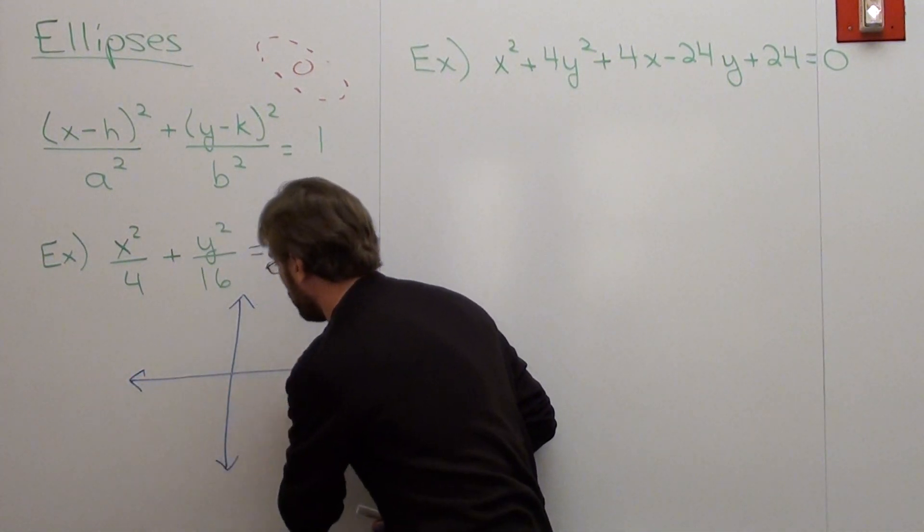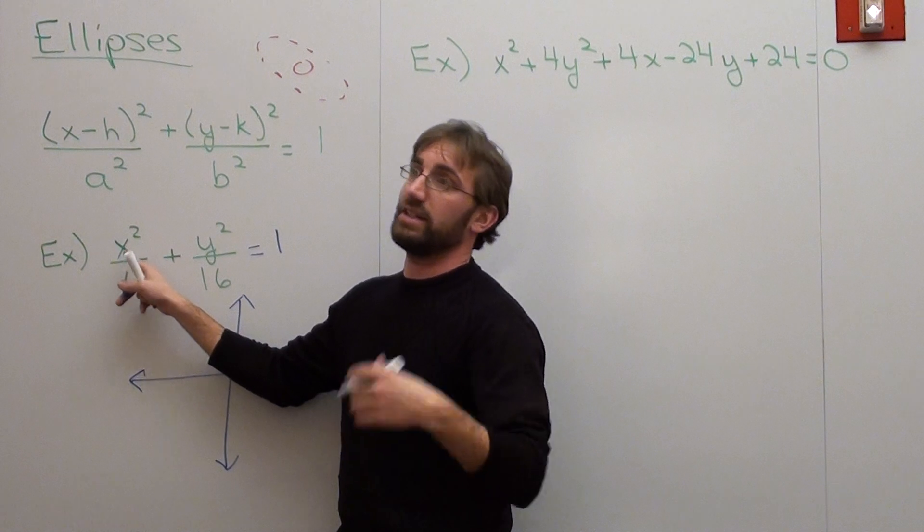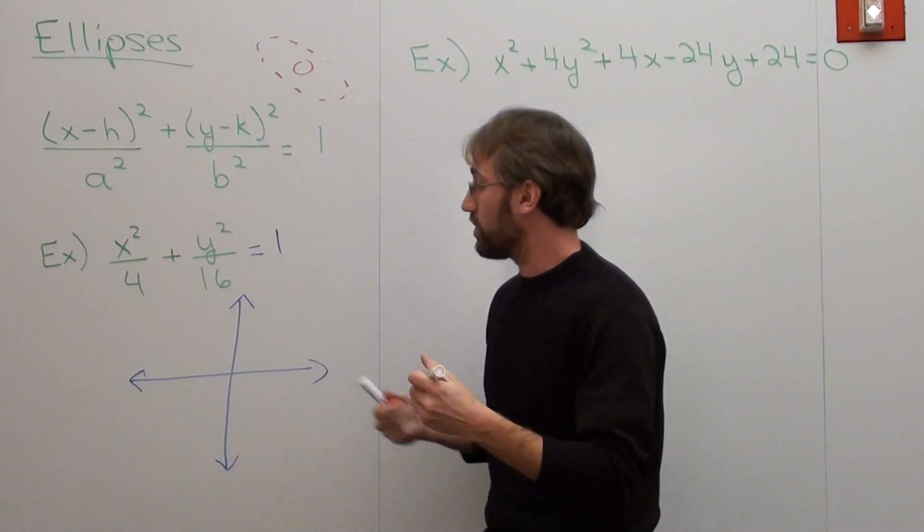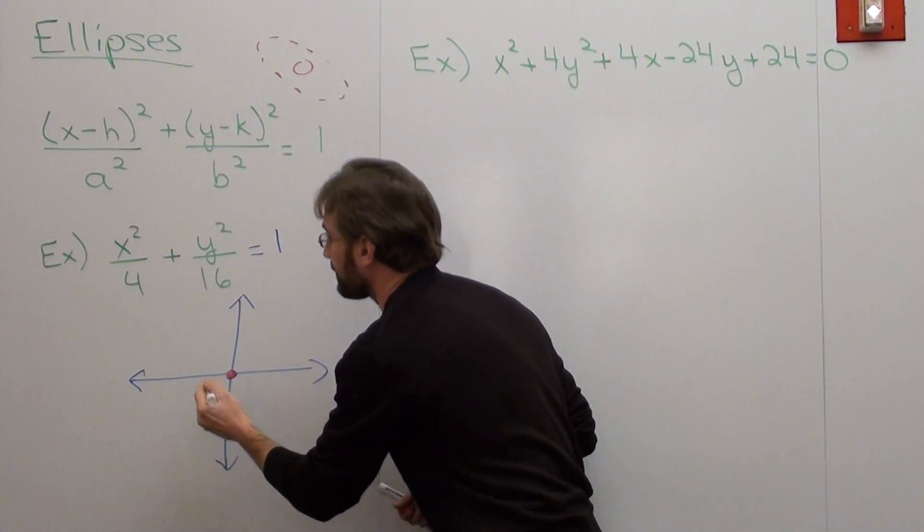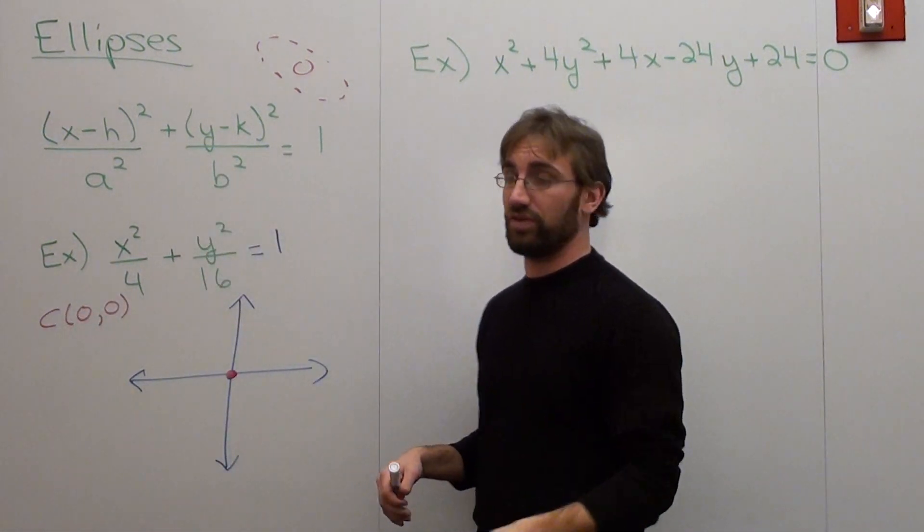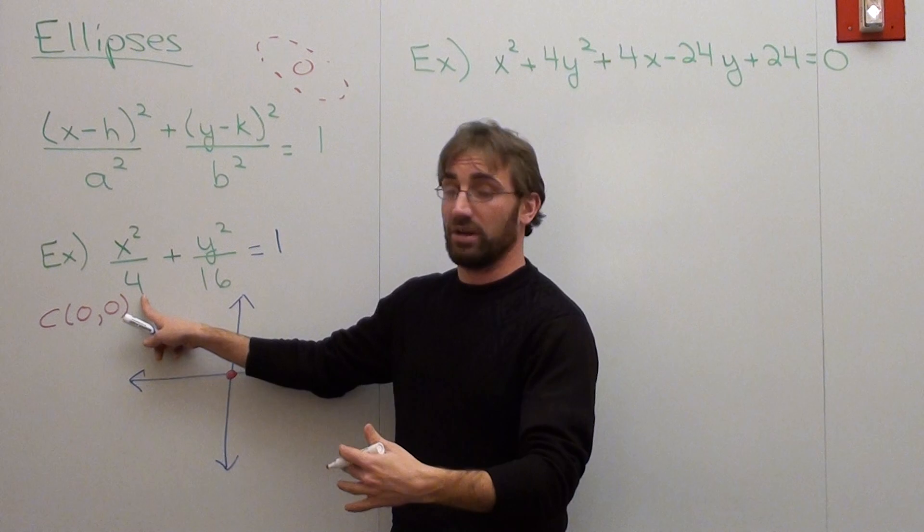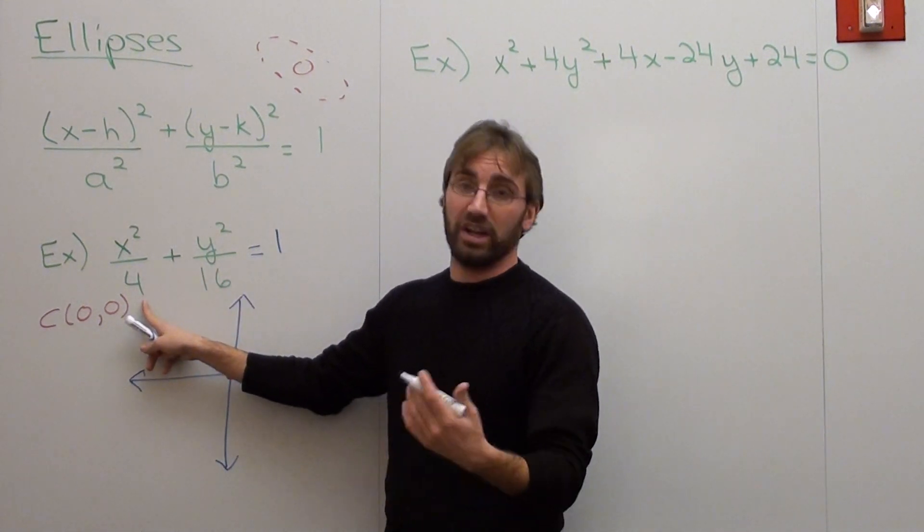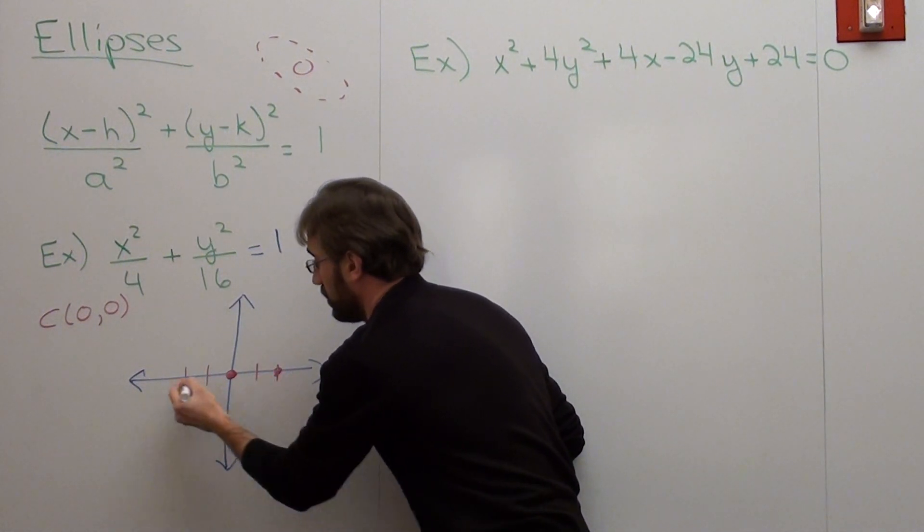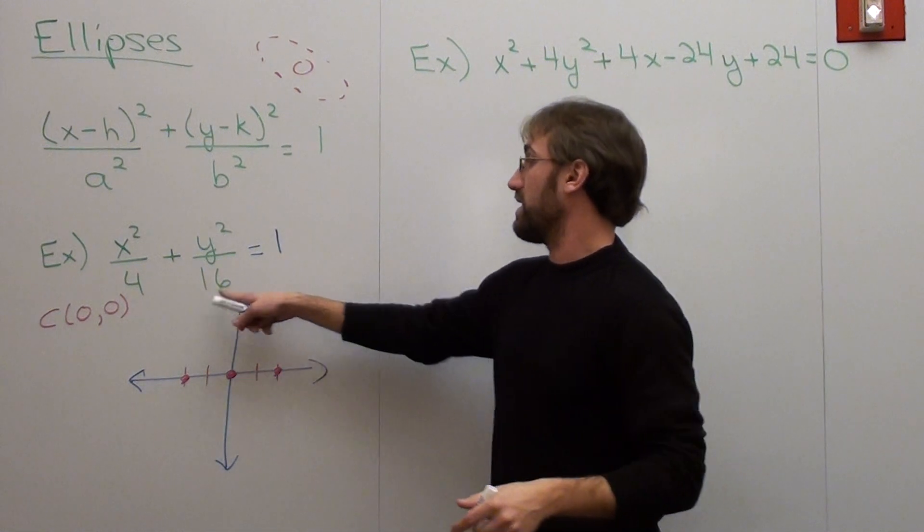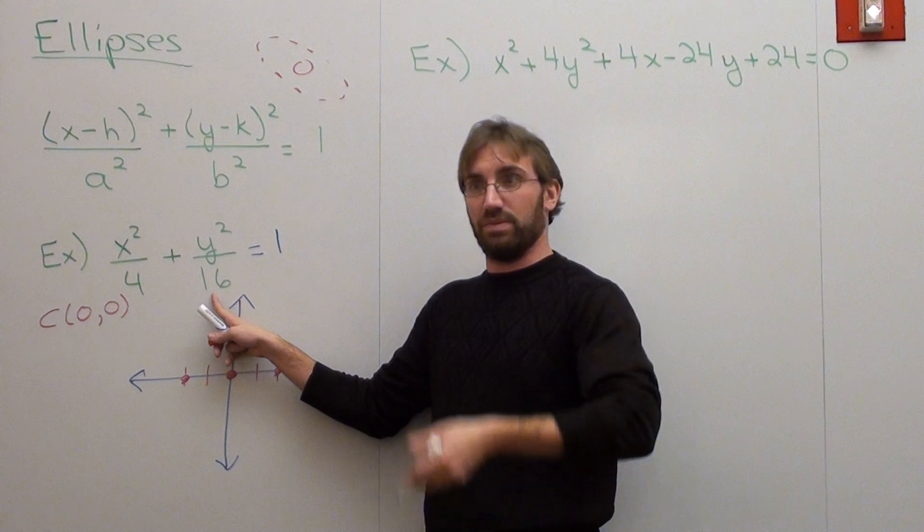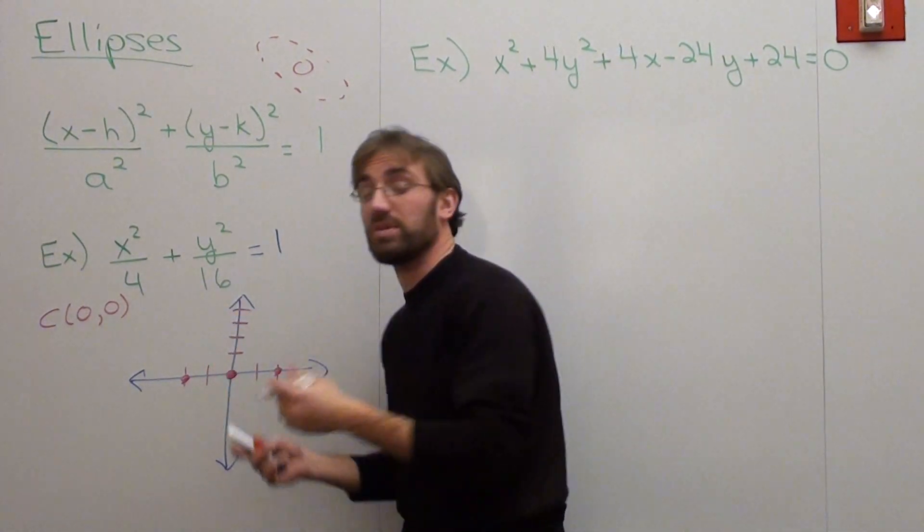So there is no h value and there's no k value. Technically, it's x plus 0 squared and y plus 0 squared, or y minus 0 and x minus 0 squared. So your center is actually located at 0,0. Here's what you do if you want to figure out how to graph an ellipse. You take the square root of this number, assuming it's equal to 1, and the square root of that is 2. It's on the x value. So you go 2 to the left, 2 to the right. You take the square root of this value, which is 4, that means you go 4 on the y-axis, both up and down. And this is from the center, mind you.